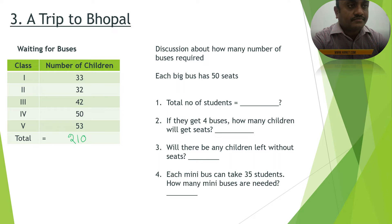So the question is: do we need four buses? One bus can take 50 children, so four buses can take 50 × 4 = 200 children. The total number of students is 210. If they get four buses, 200 children will get seats. If everyone has to go with a seat, then 10 students will be left without a seat.